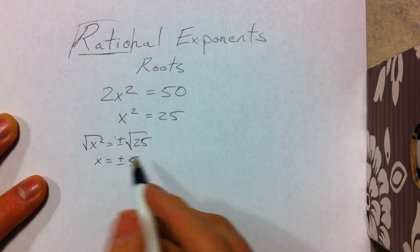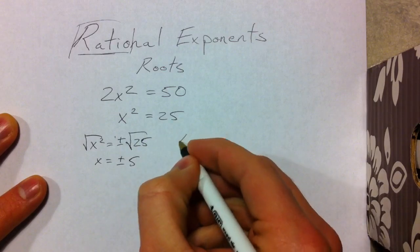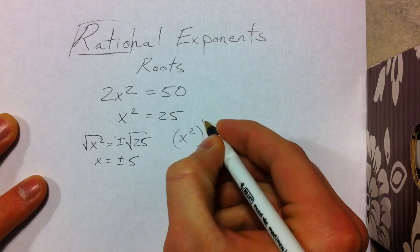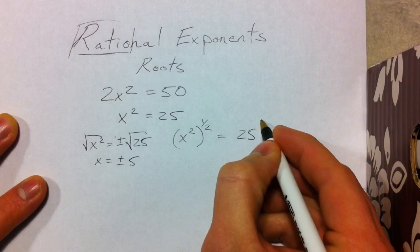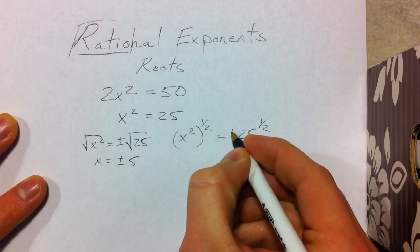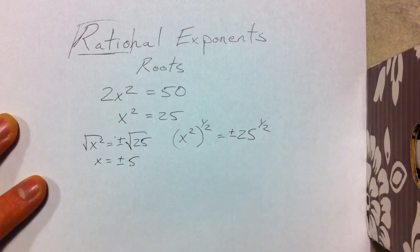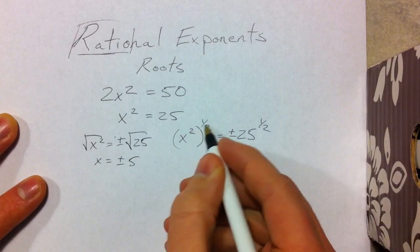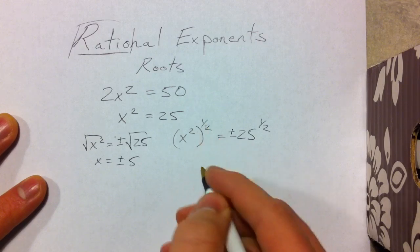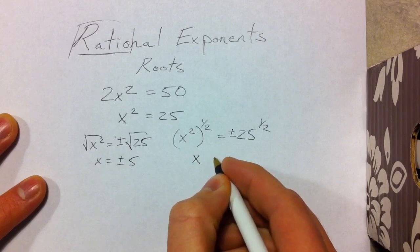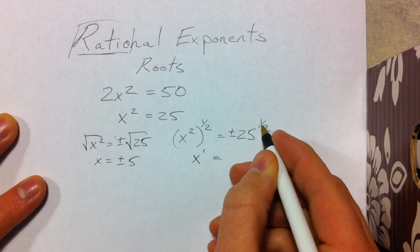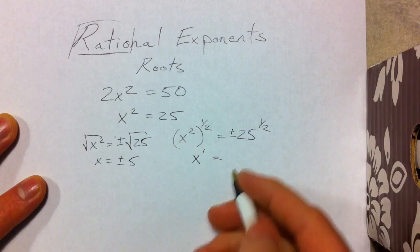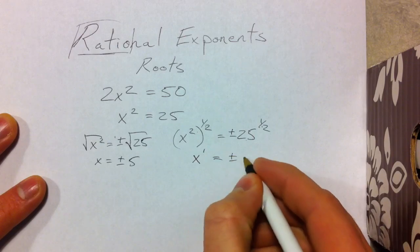Another way of thinking about taking the square root of both sides is raising both sides to the 1/2 power. Raising both sides to the 1/2 power still gives you plus or minus, just like a square root. What happens with the exponents is that 2 times 1/2 gives you x to the first power, and 25 to the 1/2 is still the square root of 25 — plus or minus 5.